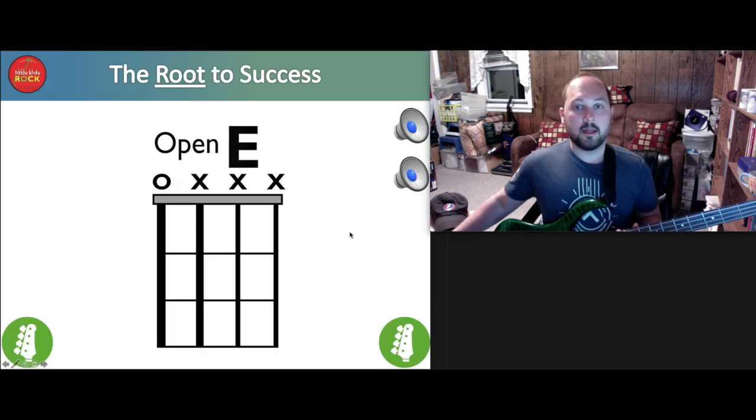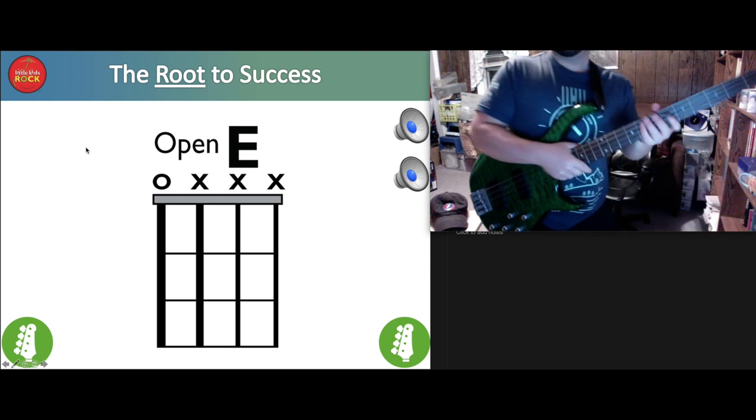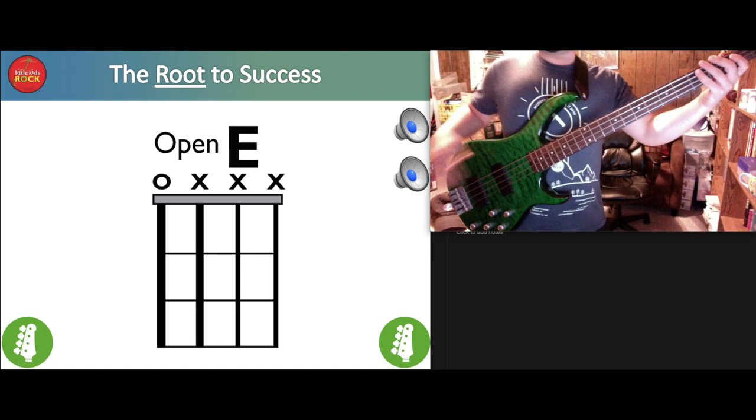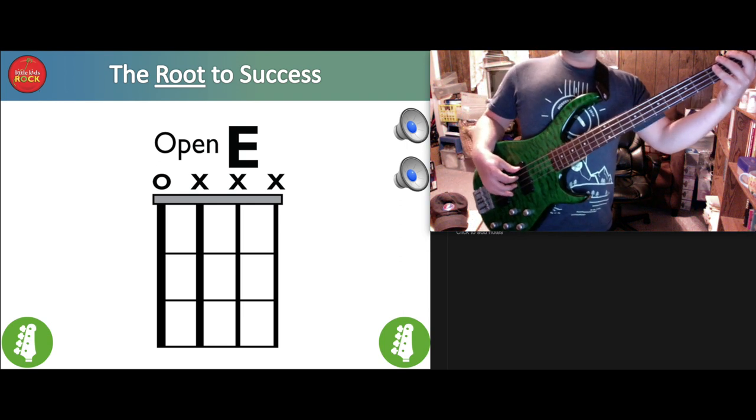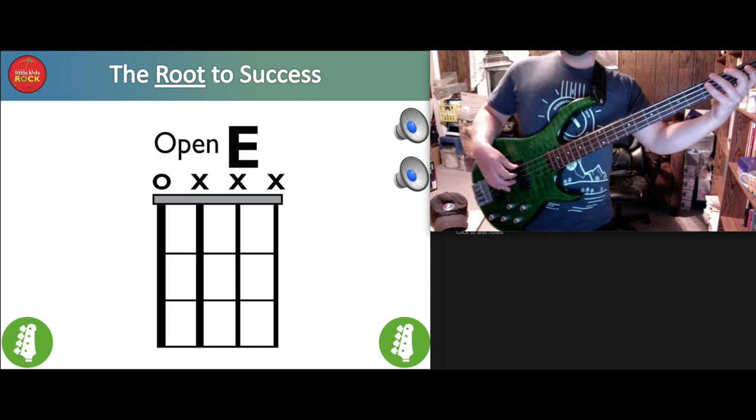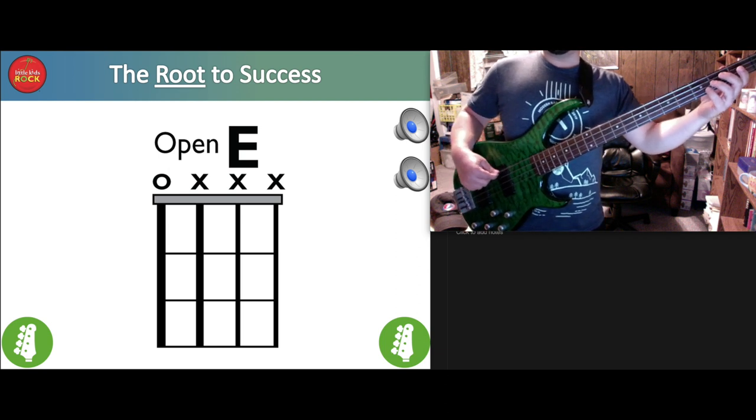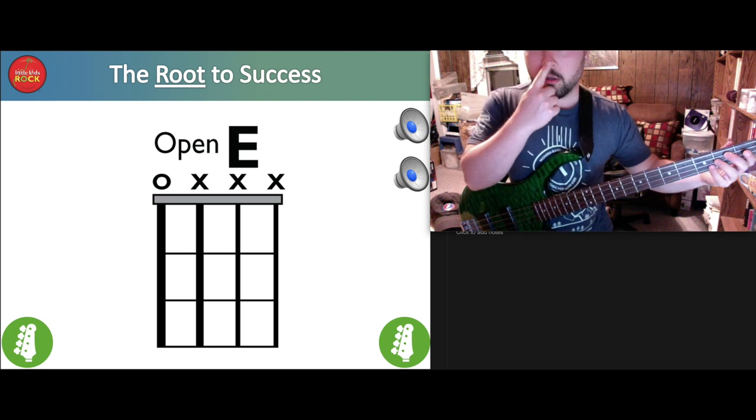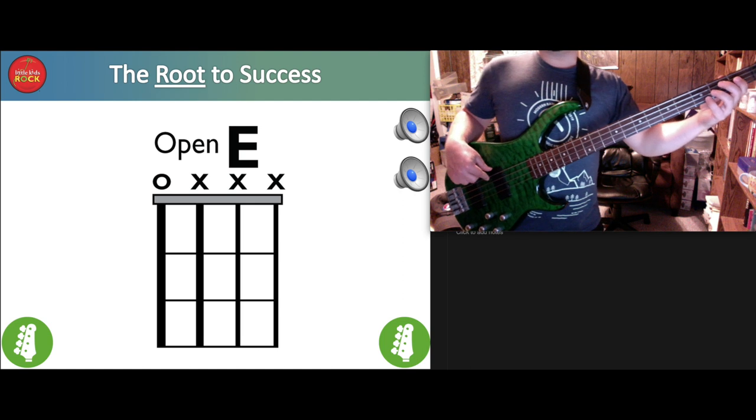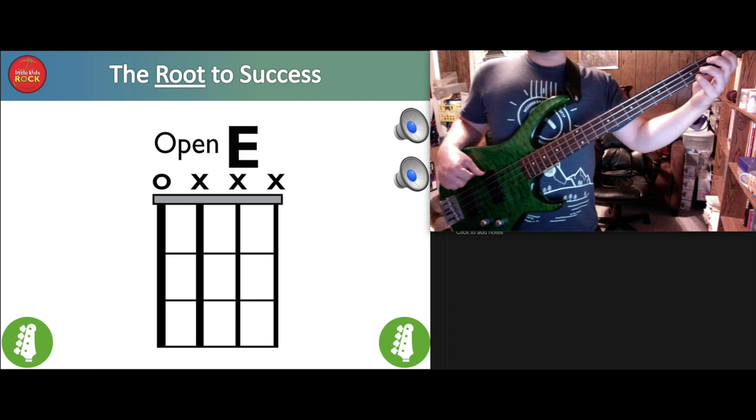So with that being said, let's grab our basses and let's warm up together. The root to success. Let me reposition myself here so hopefully you can see my bass. The root that we are playing here today is going to be E, which is the big fat low string, the one closest to your nose, not your toes. Let's let that string ring out everyone.